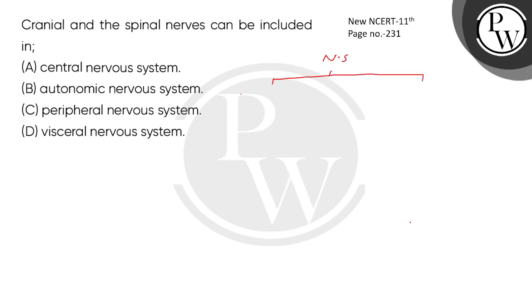Central Nervous System and Peripheral Nervous System. The Central Nervous System includes brain and spinal cord.